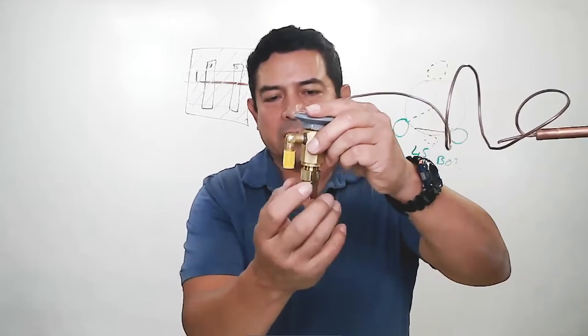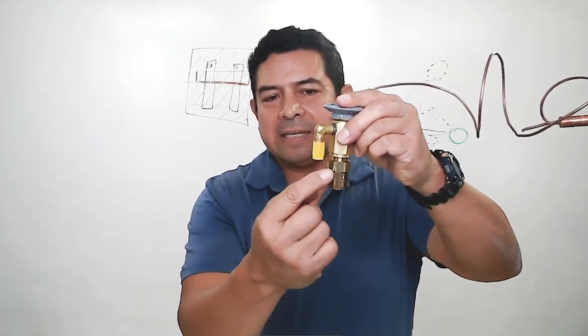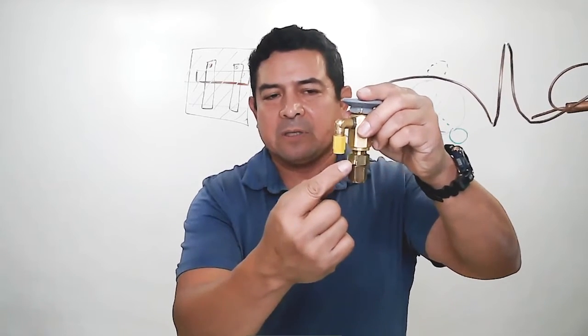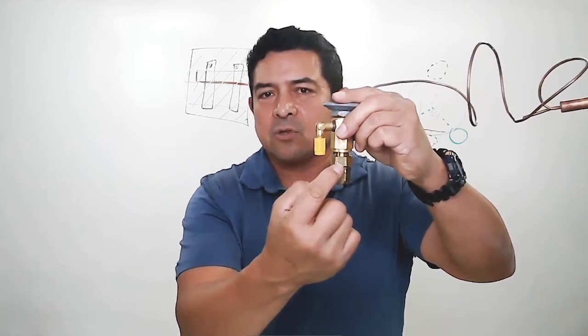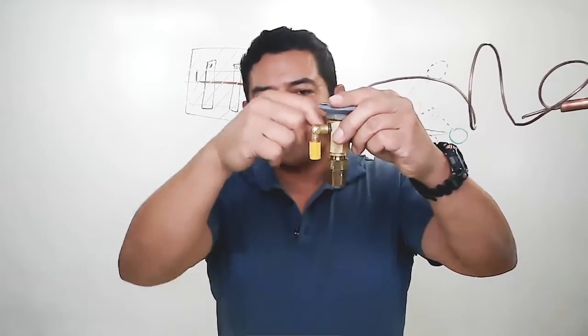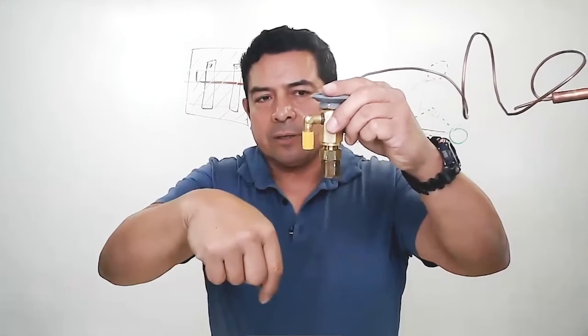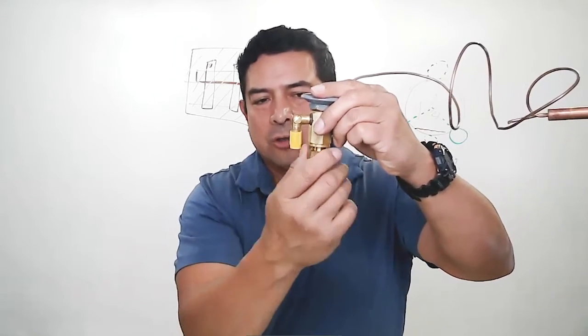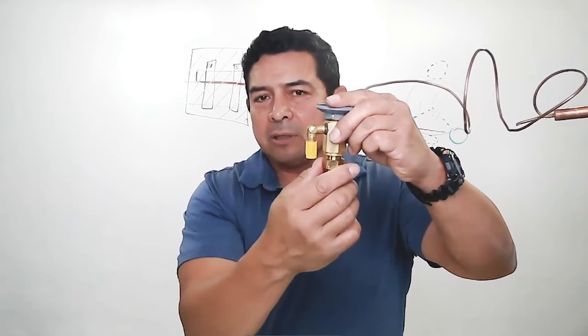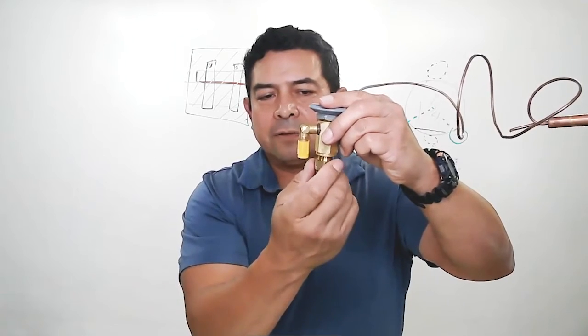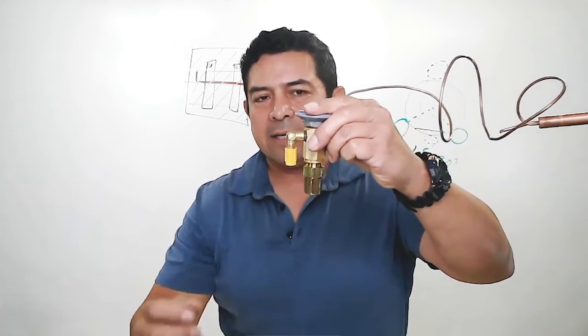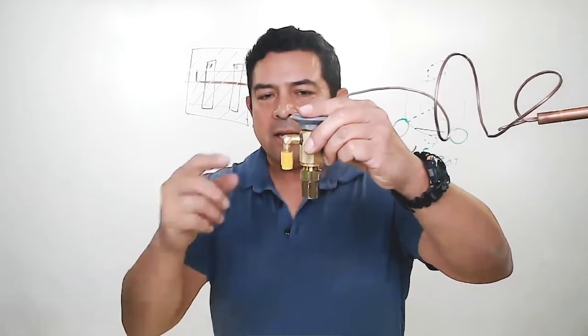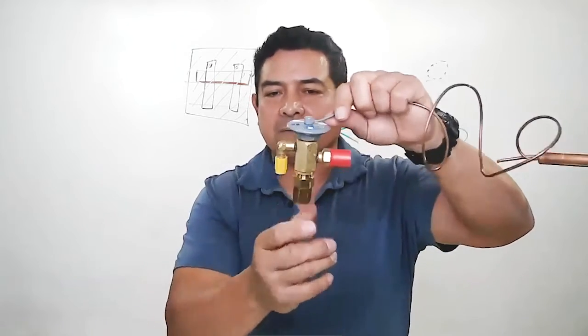You don't take this apart. In here, you have a seal of some kind. Sometimes they use Teflon, sometimes they use rubber to make sure that the pressure does not leak out this way. So what happens is you leave this in there, you're going to melt all of that. So you need to take this off, you need to remove it, set it aside, take the pins out, and then you can install your TXV in place.